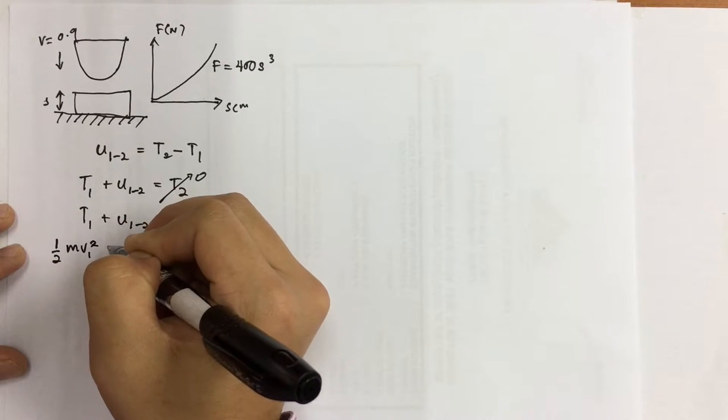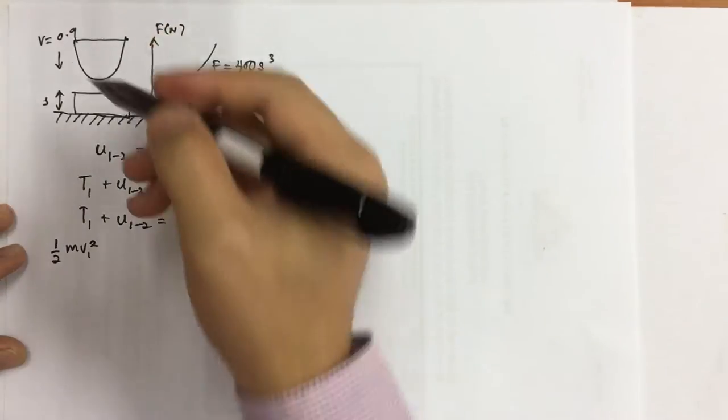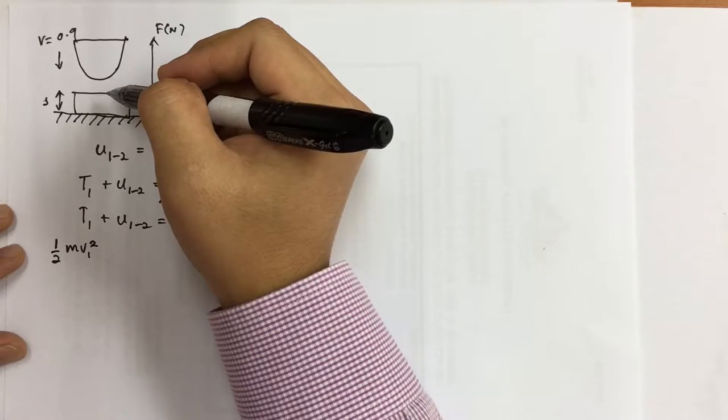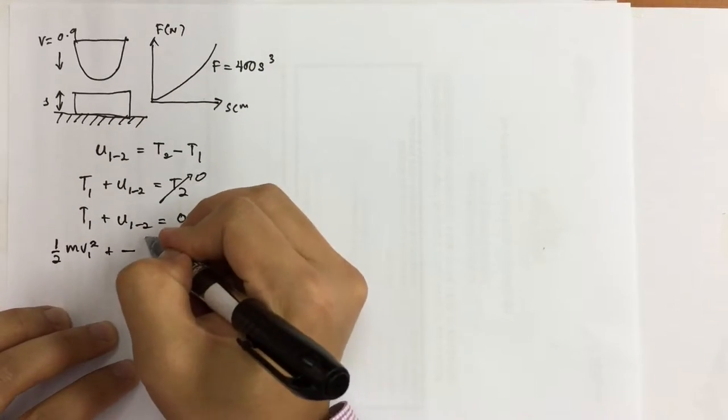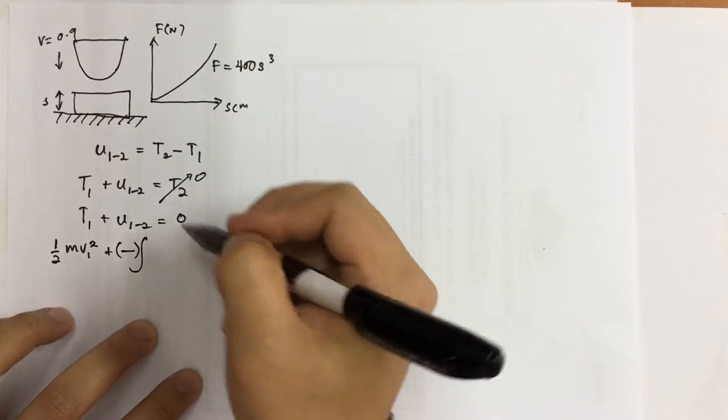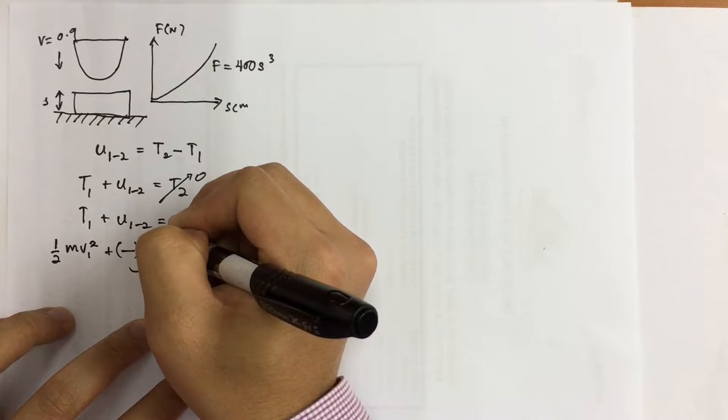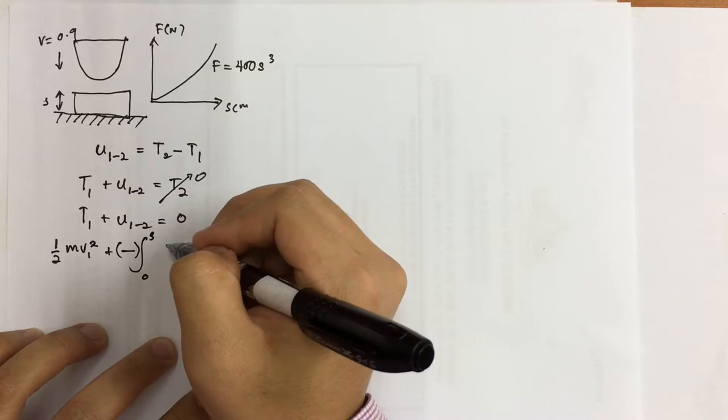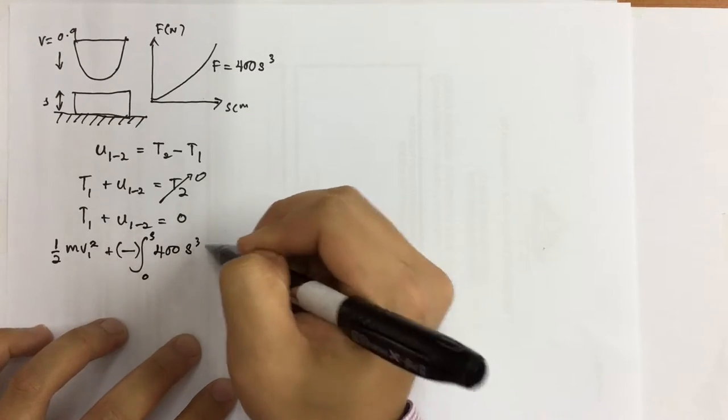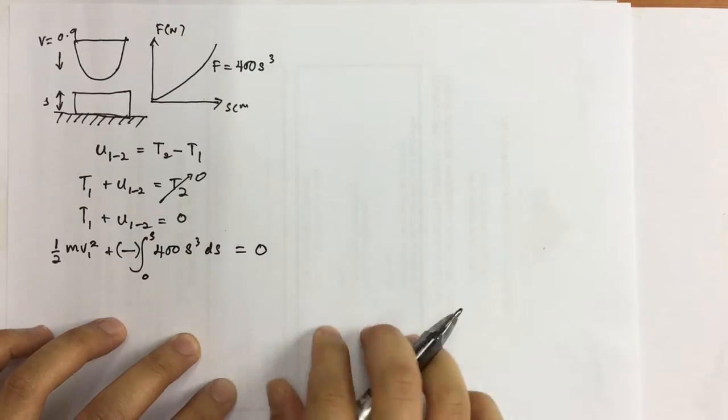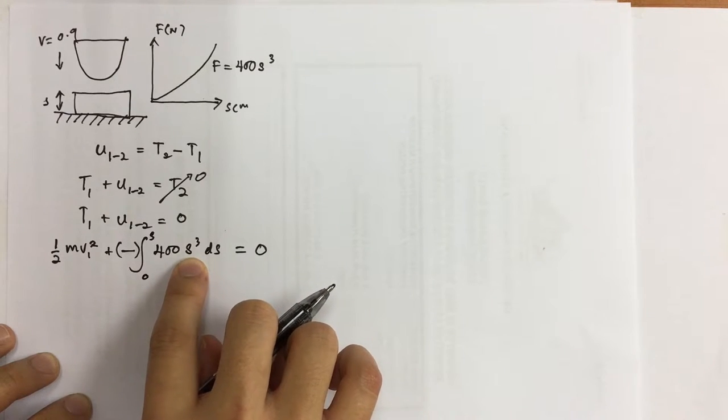Since you are going to stop, the bumper experiences negative energy, so we are going to put here minus. And then the final distance is zero, the first one is s, and then you are going to have the integral from zero to s of 400s cubed ds equals to zero.